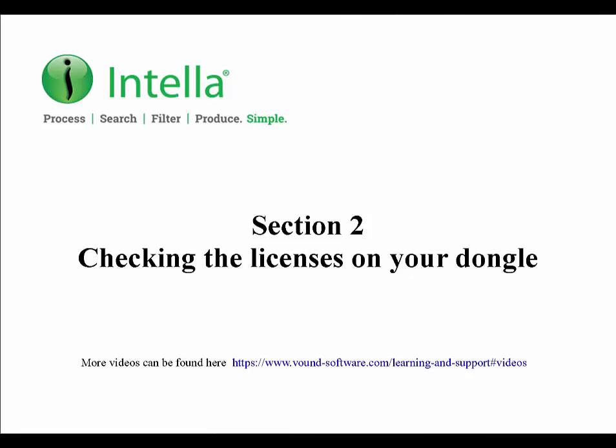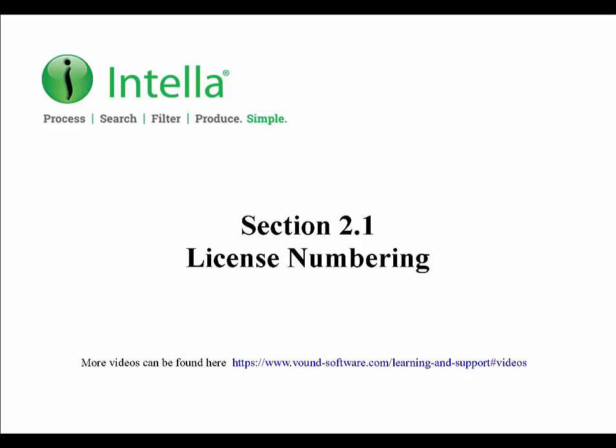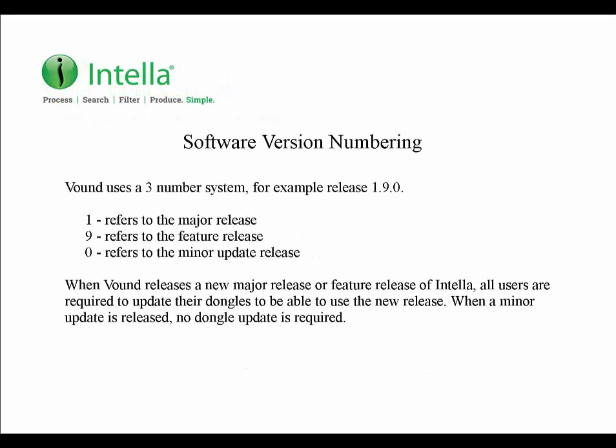This section covers the version numbering for our products and checking the licenses on your dongle using two different methods. Vound uses a three number licensing system for its products. For example, in the release 1.9.0, the 1 refers to the major release, the 9 refers to the feature release, and the 0 refers to the minor update release. Dongle licensing is applied to the major release and feature release levels, which means that you don't have to update your dongle for minor releases.